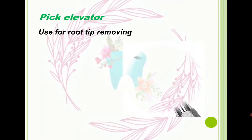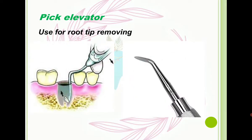The third elevator is called a pick elevator. Look at the blade — we can also use this elevator for root tip removal. Pay attention to this picture: there is a root tip inside the socket, and with this elevator we can easily find it and remove it.